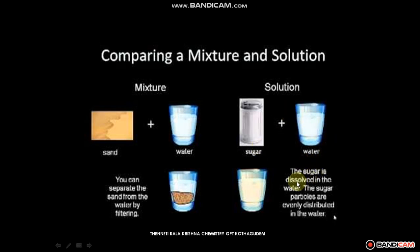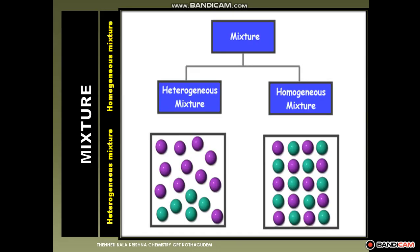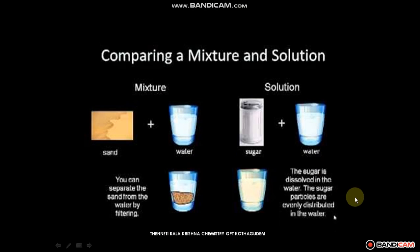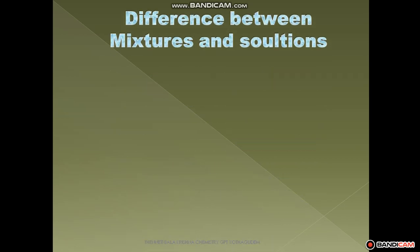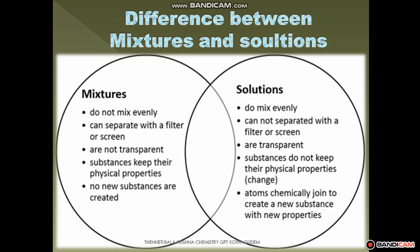In a homogeneous mixture, taking the example of sugar dissolved in water — the sugar particles are evenly distributed in water. We can't separate such a mixture, so it is called a homogeneous mixture. So the difference between mixtures and solutions: mixtures are heterogeneous mixtures, while solutions are homogeneous mixtures.